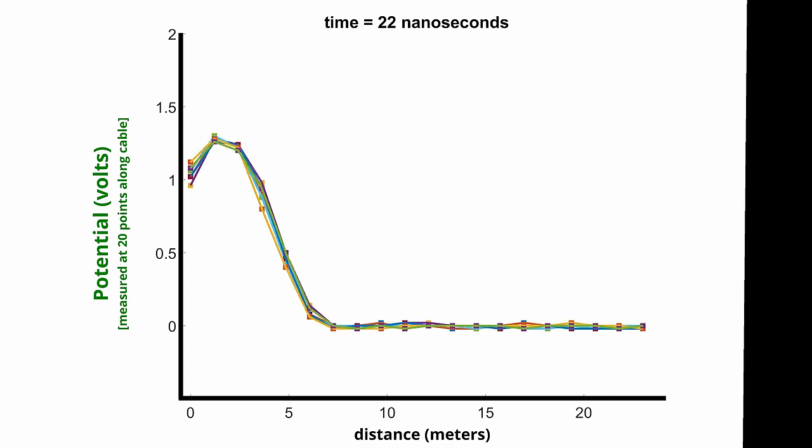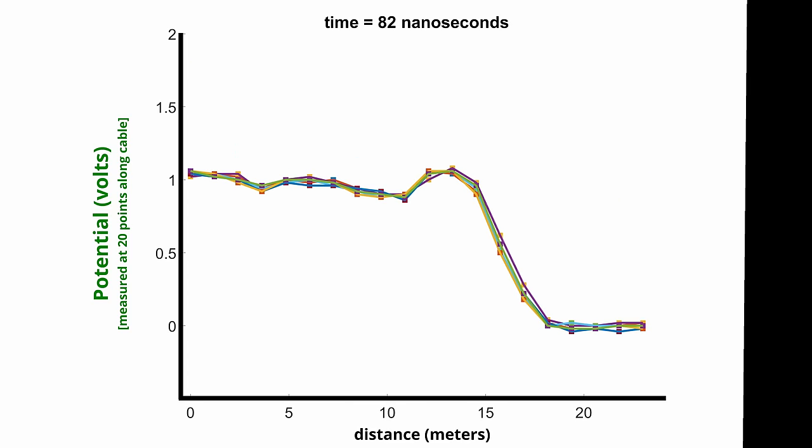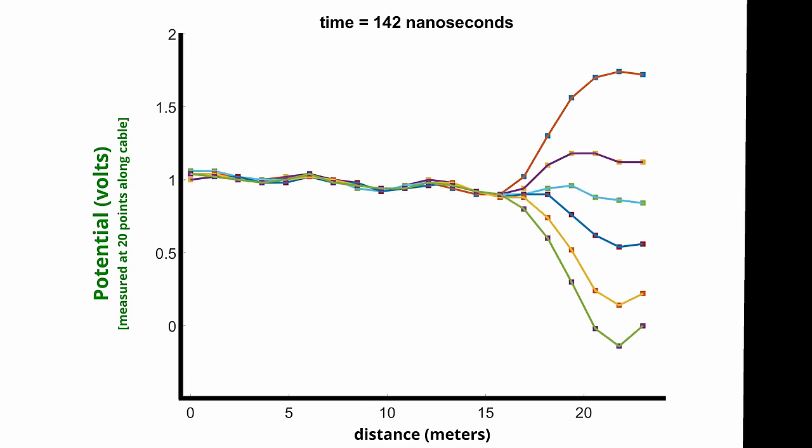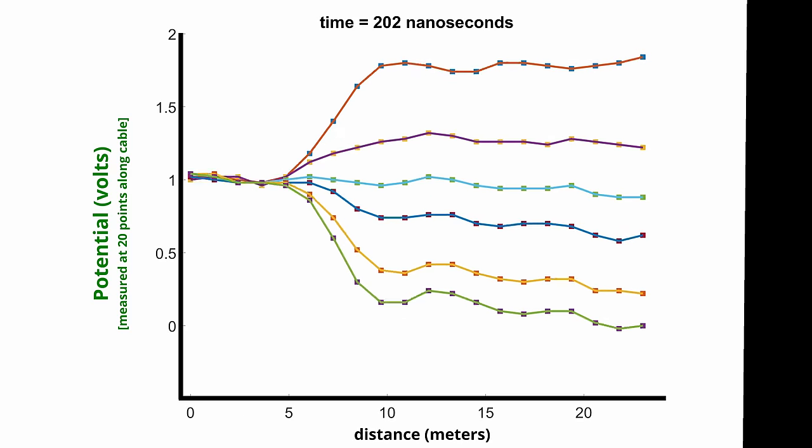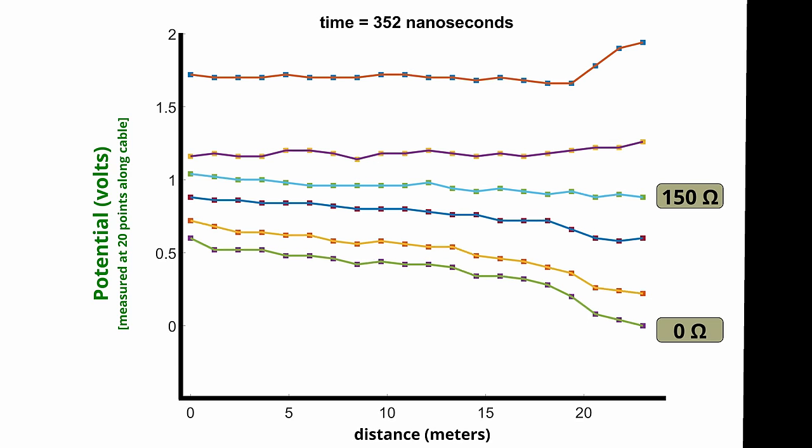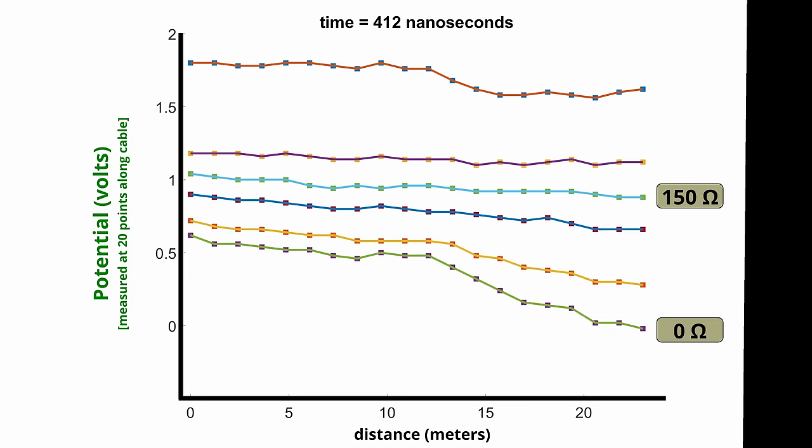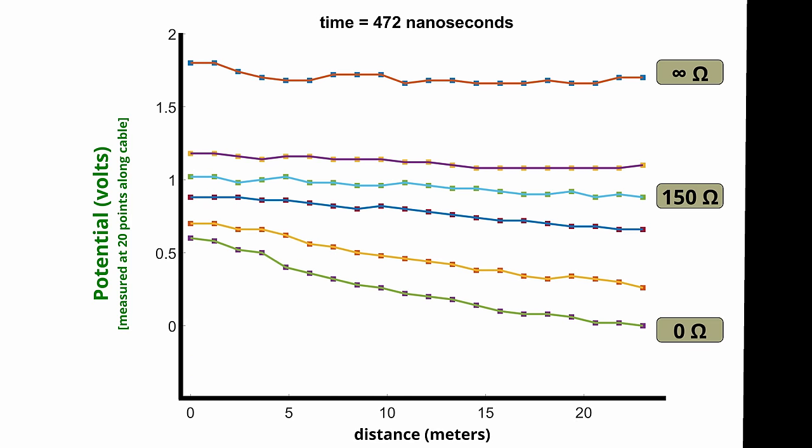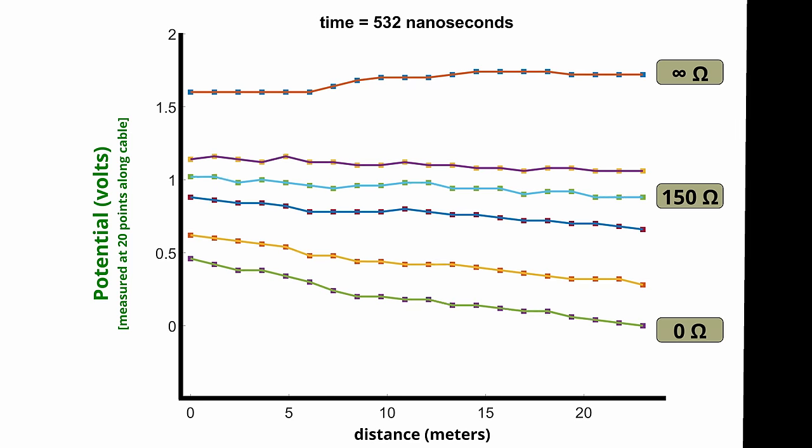So we have these identical waves traveling down their cables and then they all hit different loads. Can you spot the impedance matched circuit with the 150 ohm resistor? It's that one. And this one dropping to zero is the zero ohm short and this totally flat one up top is the infinity ohm disconnected wire.